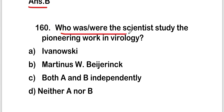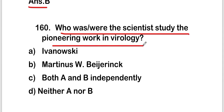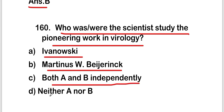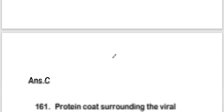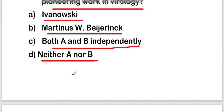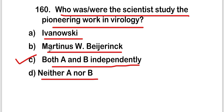The last question is: who were the scientists who did pioneering work in virology? The options are Ivanovsky, Martinus Beijerinck, both A and B independently, or neither A nor B. The right answer is option C, both A and B independently. Ivanovsky and Beijerinck both independently did pioneering work in virology.